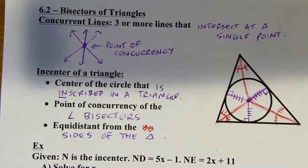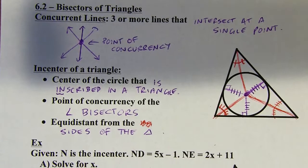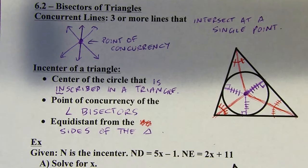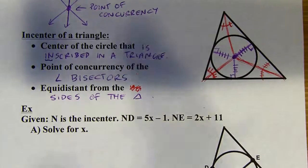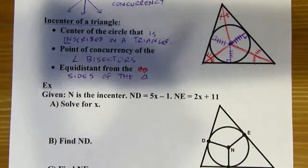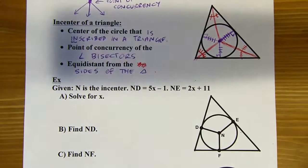So those purple spokes are all congruent because the incenter is equidistant from the sides of the triangle. I'll put four dashes on each of these just so it doesn't get confused with the angles. That's what you need to know about the incenter of a triangle — there's kind of a lot to digest there, but let's take a look at an example.